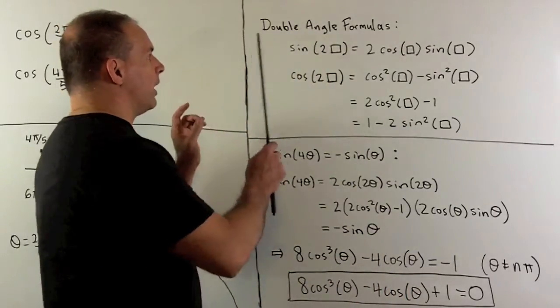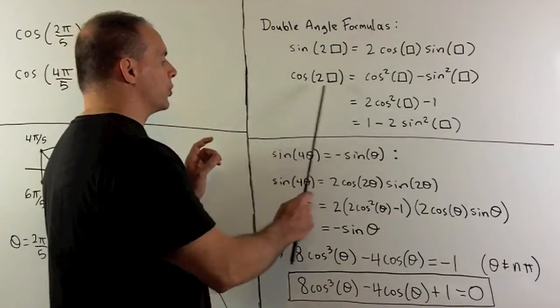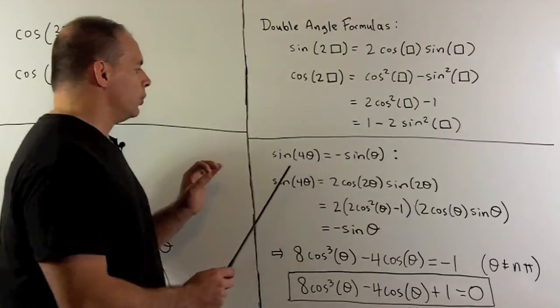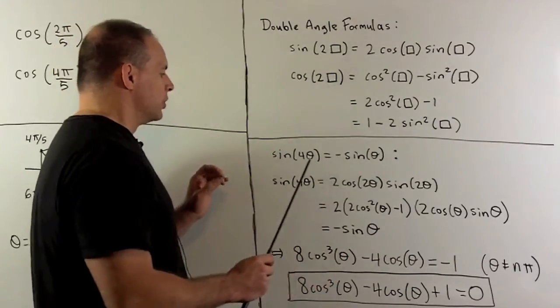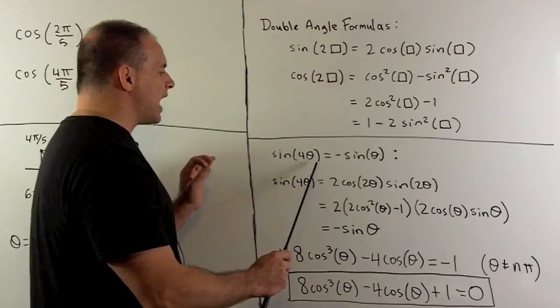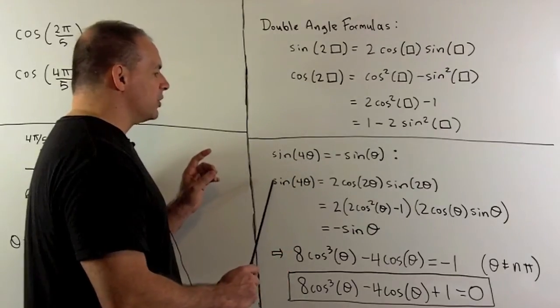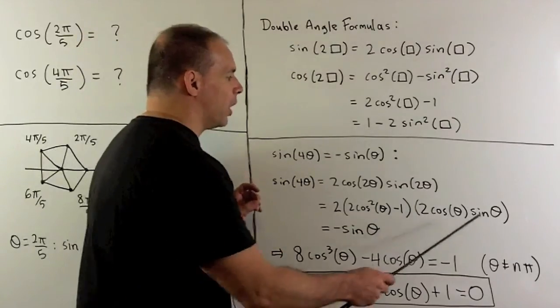Now, we have our double-angle formulas for sine and cosine. We take our equation. So we're just going to follow out the left-hand side until I get everything in terms of cosine and one sine.